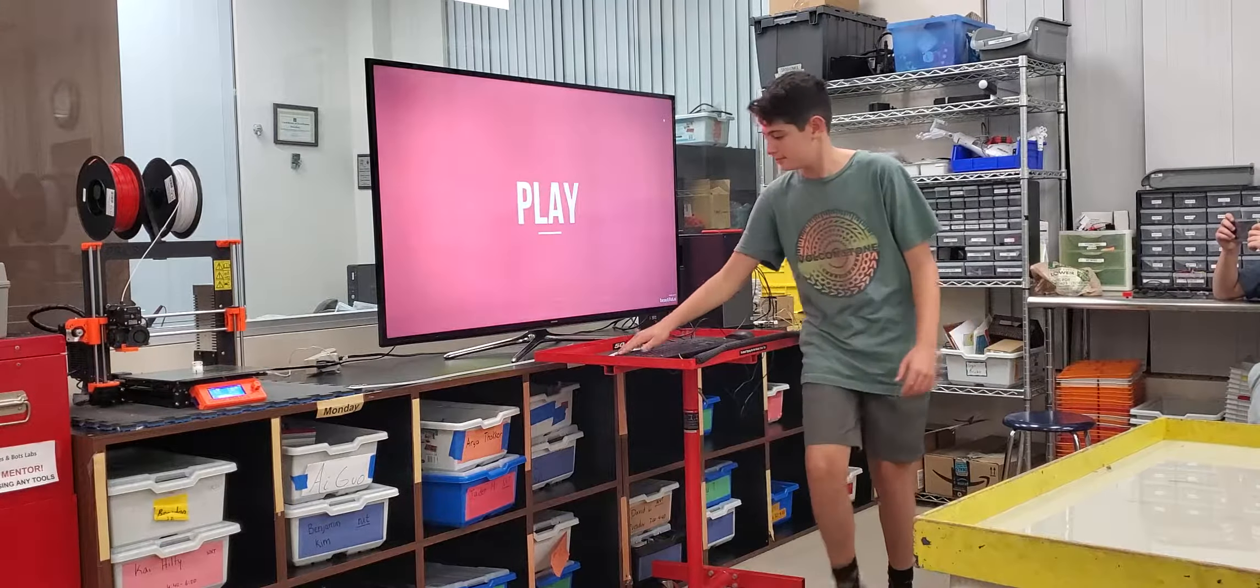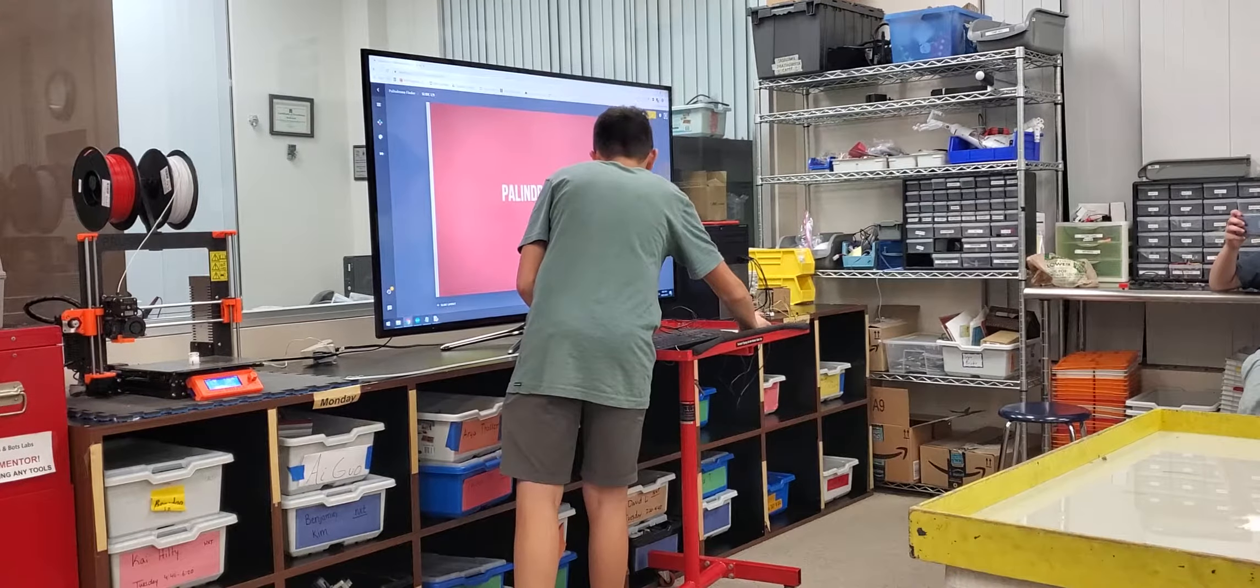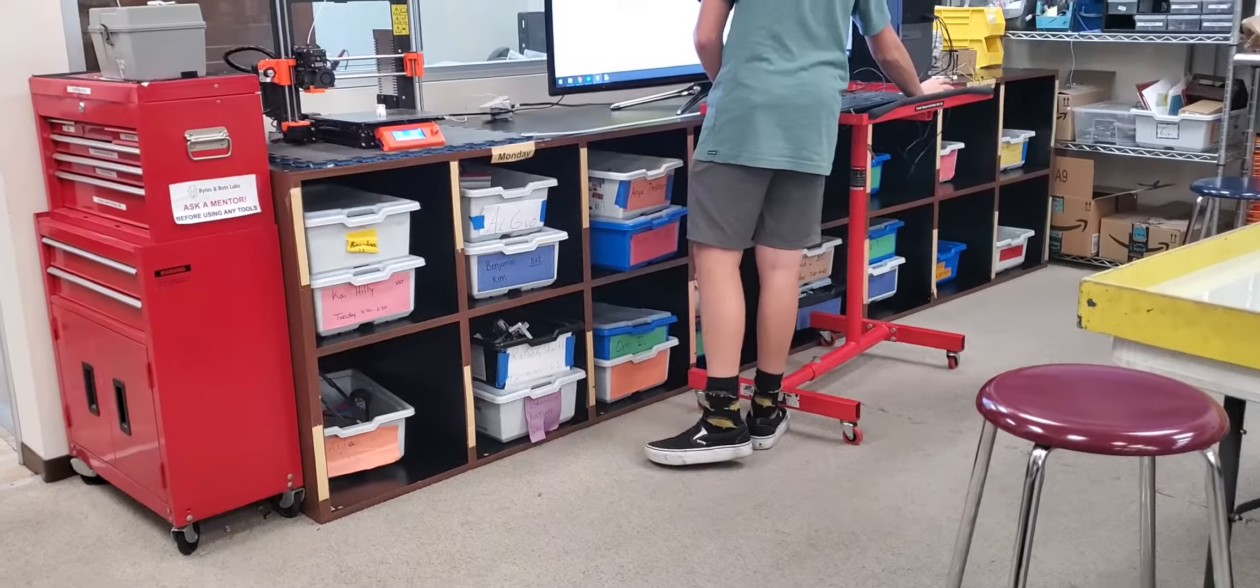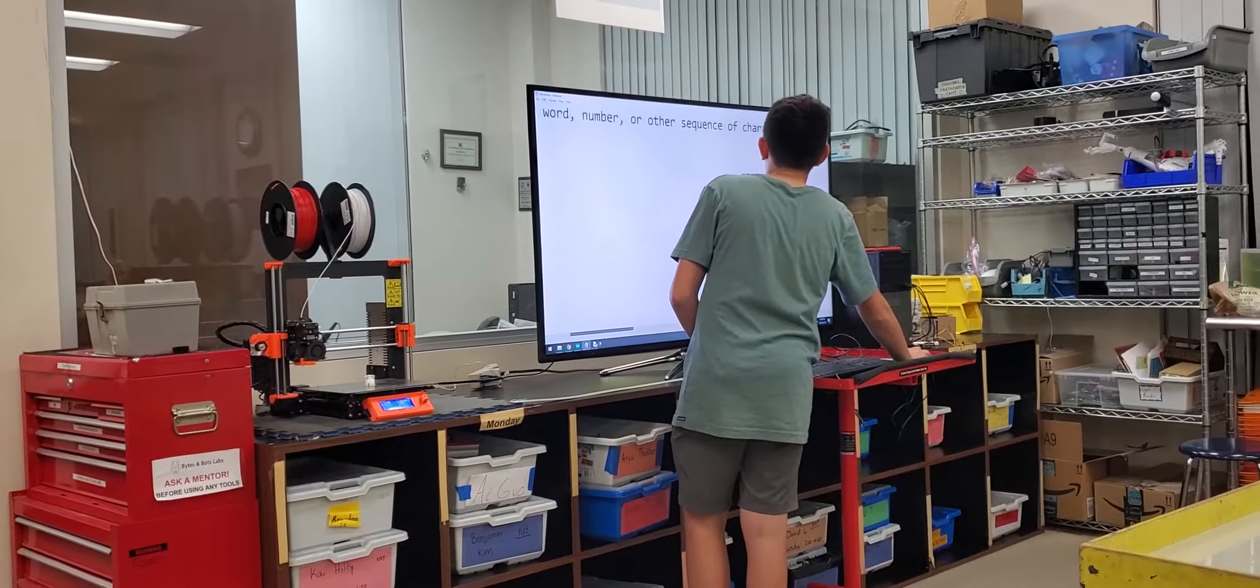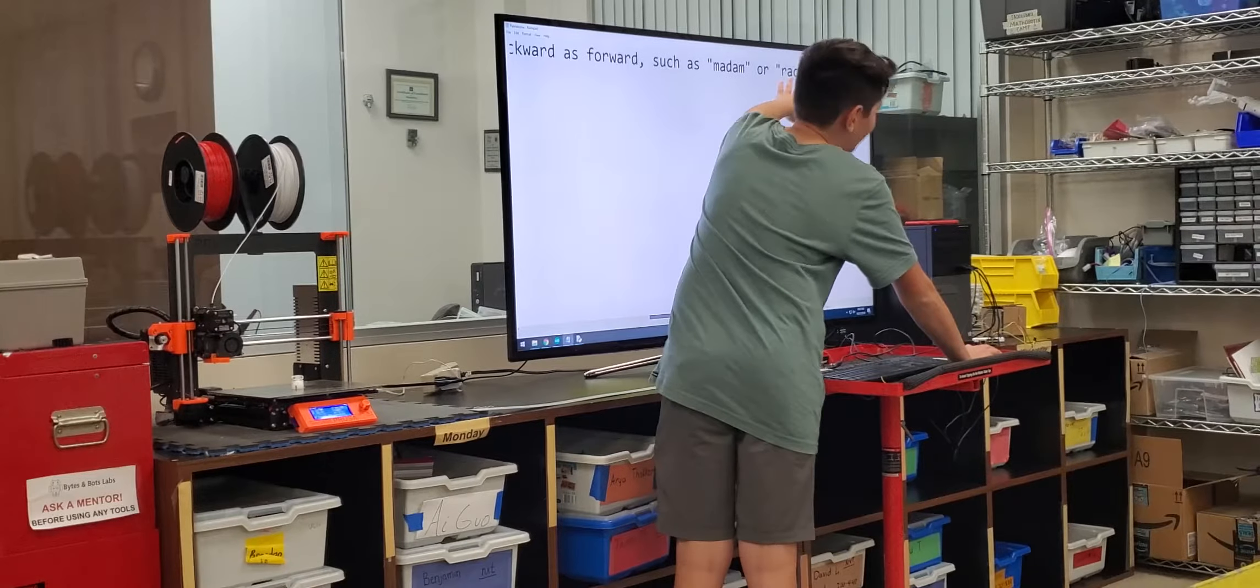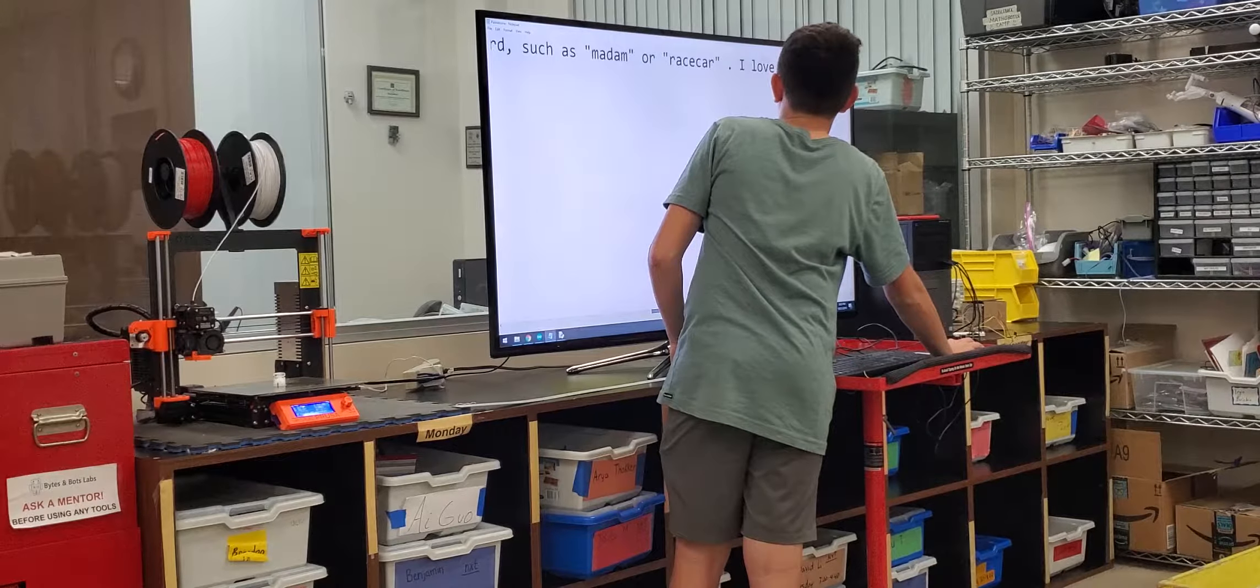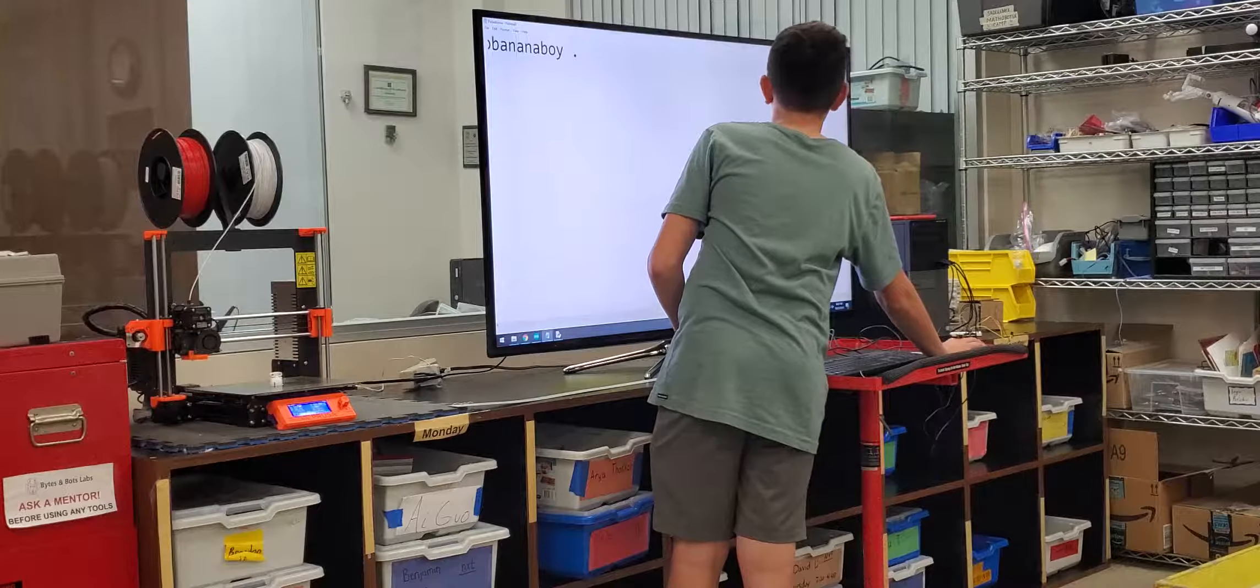I will play it now. Alright, so for reference, I just typed a bunch of random words. I'll just read: a palindrome is a word, number, or other sequence of characters which reads the same backwards as forwards, such as madam or race car. Those will be some of the words in the text. And then I just put this random one: I love Rocky Road ice cream and banana boy, just so I have more words to do. That's the text file.